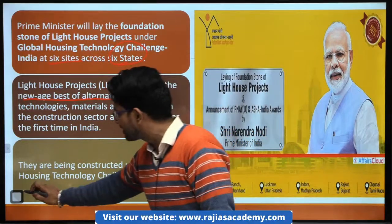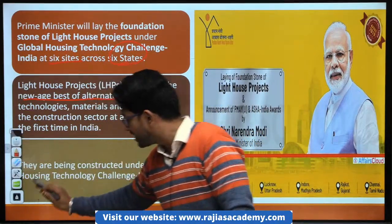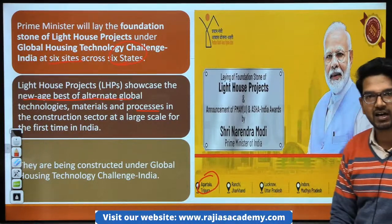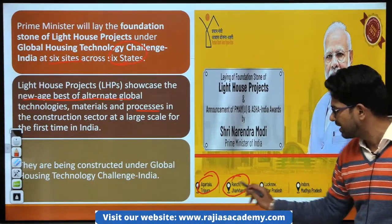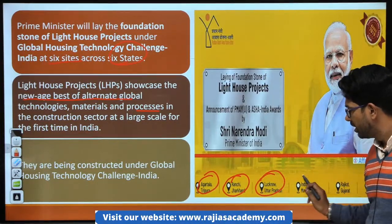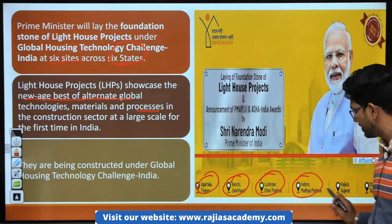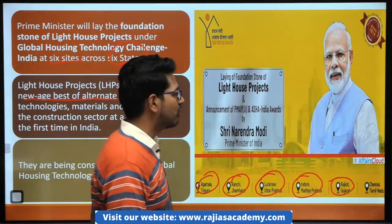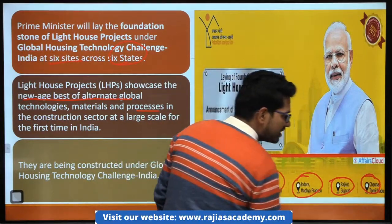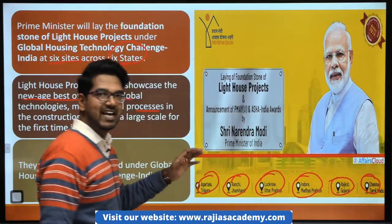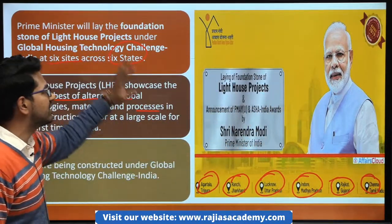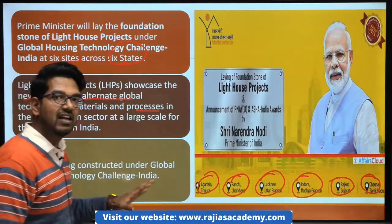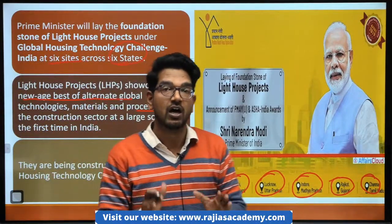Jo 6 states hain wo hain: Tripura mein Agartala, Ranchi in Jharkhand, Lucknow in Uttar Pradesh, Indore in Madhya Pradesh, Rajkot in Gujarat, aur sixth one Tamil Nadu mein Chennai. So these will be the six states and six areas where this initiative has been started, aur is project ke tahat hum Pradhan Mantri Aavas Yojana ko implement karenge.